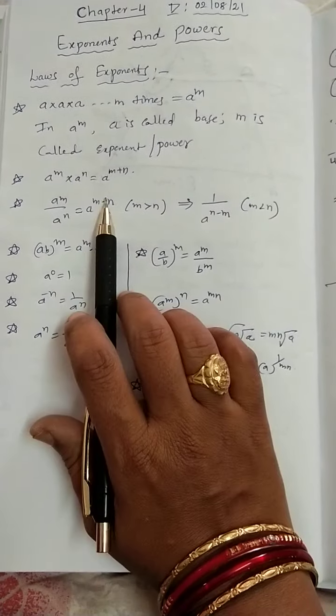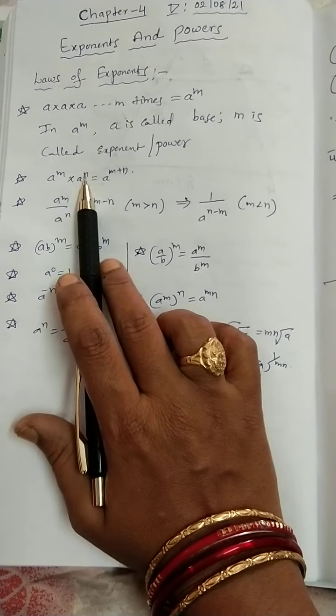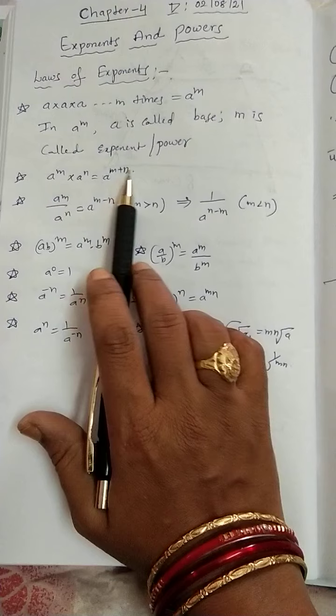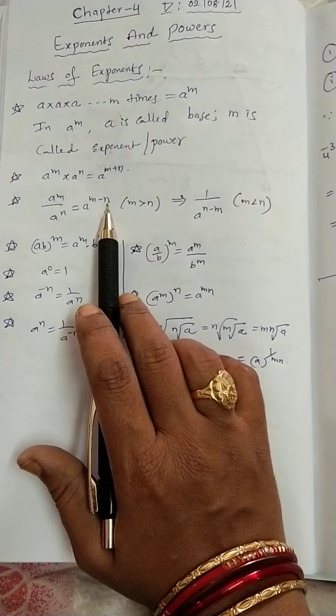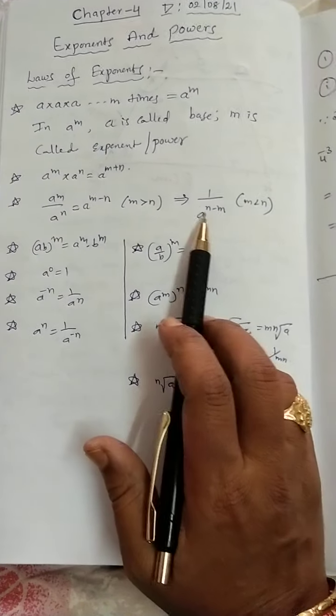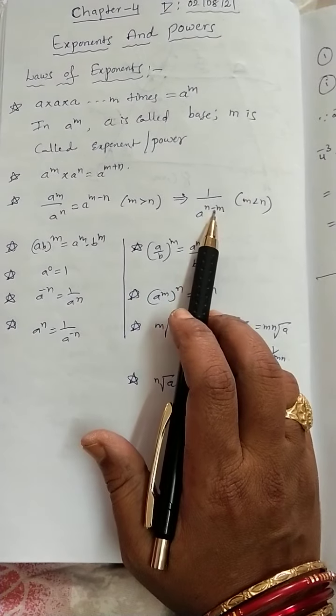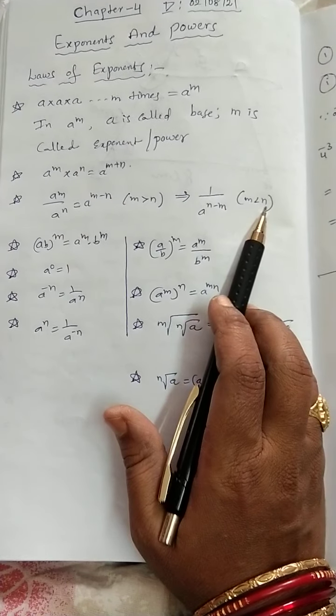So, some laws of exponents, means that formulas. See here, A power M into A power N is equal to A power M plus N. A power M by A power N is equal to A power M minus N. M is greater than N, okay. So, we can write as 1 by N minus M when M is less than N.